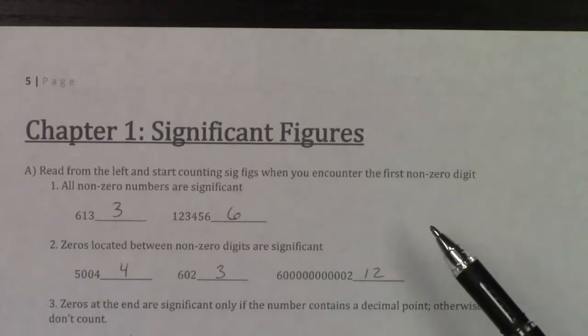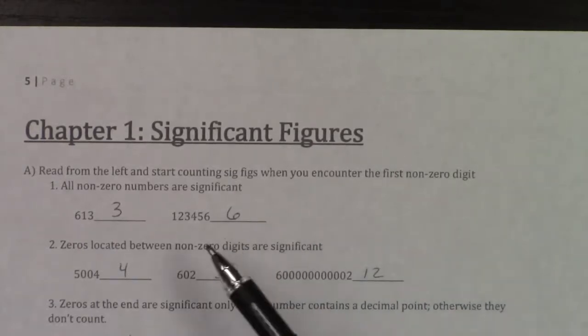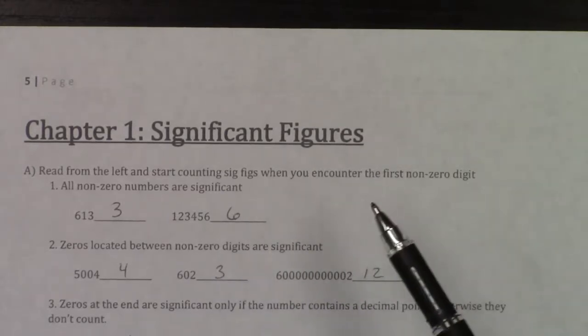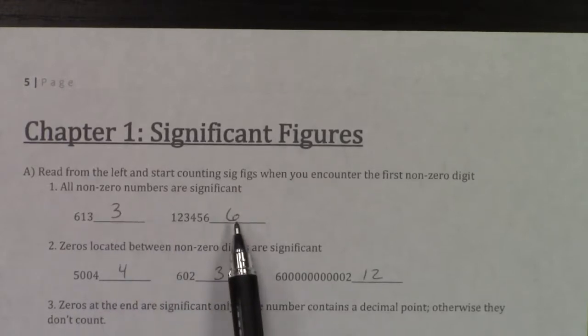If you take a look at the first rule, if you read from the left and start counting sig figs when you encounter the first non-zero digit, all non-zero numbers are significant. In this case, all non-zero numbers are significant, which is why this has 3 and this has 6.